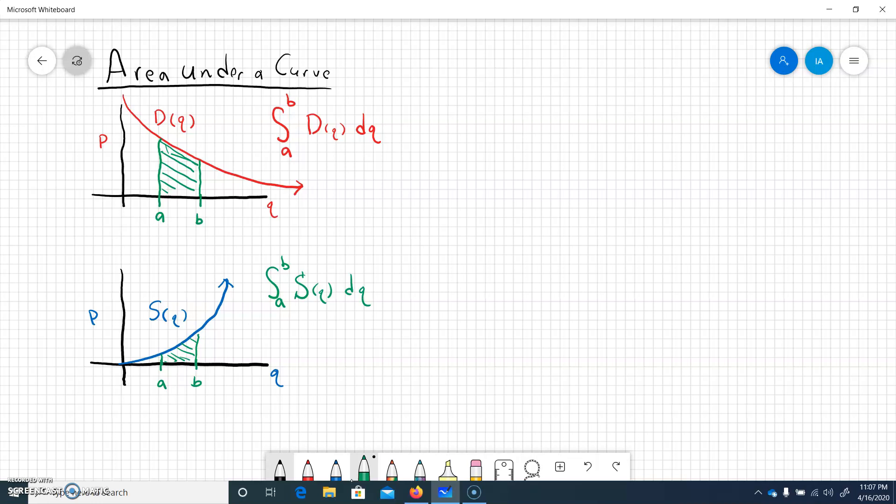Now something we haven't done is we haven't found the area between two curves. So let's see what I'm talking about here and get a good explanation of what it would be. So here I can once again have the quantity and I can have the price. I can have my demand curve and we might need a couple liberties here, but this would be D of Q and we would have our supply curve, S of Q.